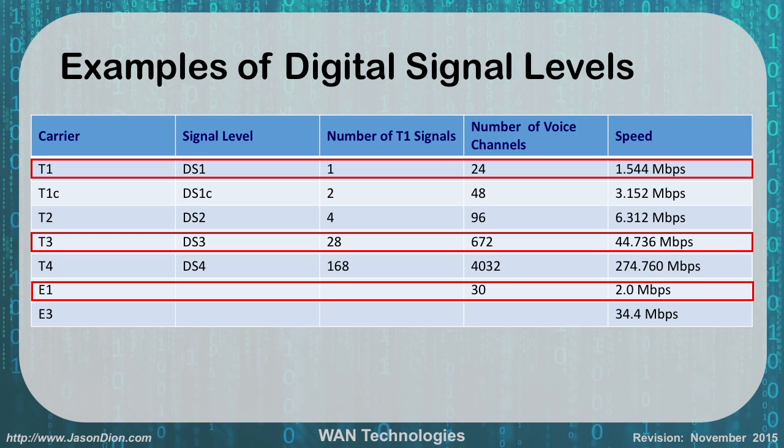One thing to note about the T1 is in the old days when businesses would get a T1, it wasn't just for data. They could actually break it up into voice channels as well. The T1 would provide 24 voice channels or up to 1.544 megabits per second of speed, because each voice channel took 64 kilobits.